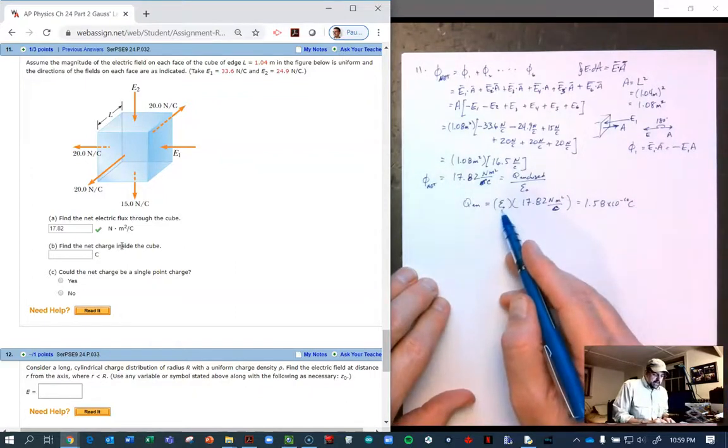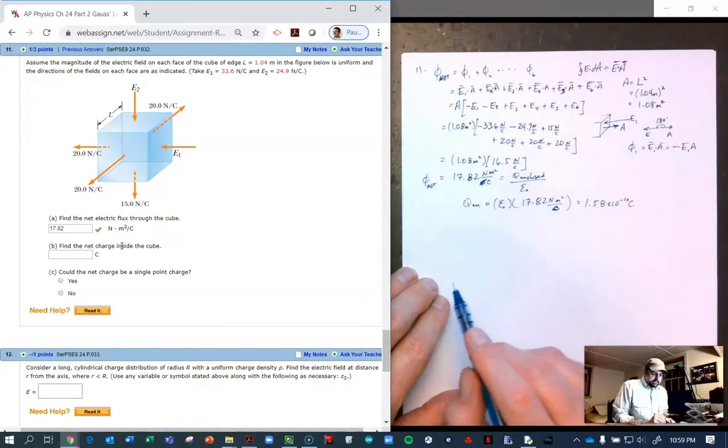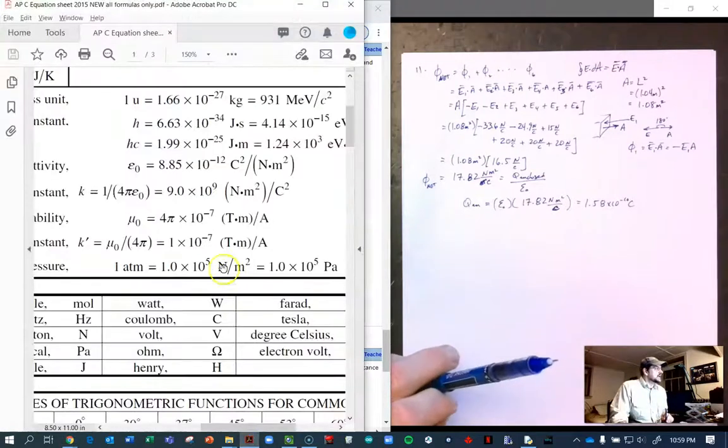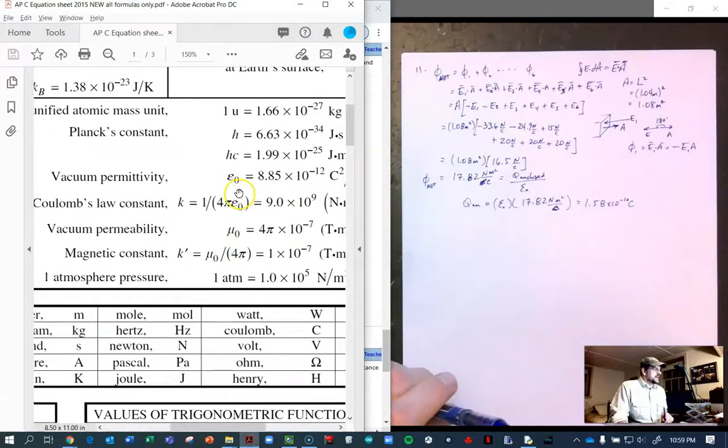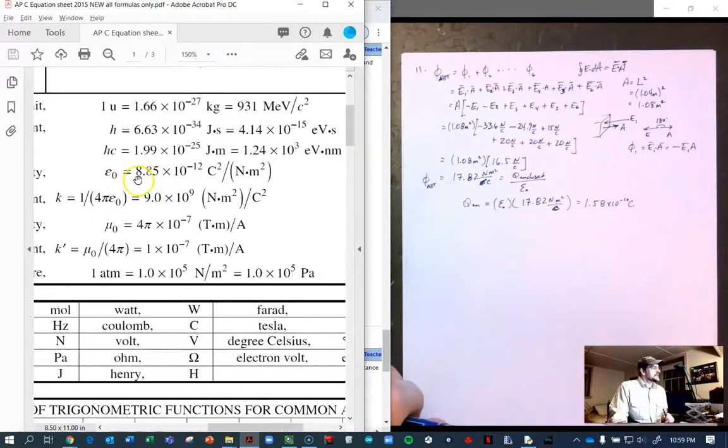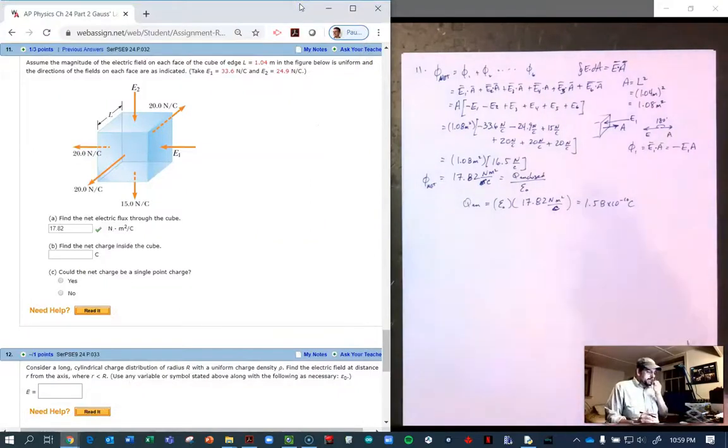Remember, epsilon naught, it may be worthwhile pointing out again where this epsilon is. This epsilon naught is the vacuum permittivity, as the AP likes to call it. I prefer the permittivity of free space. But there it is. 8.85 times 10 to the minus 12 coulombs squared per newton meter squared.